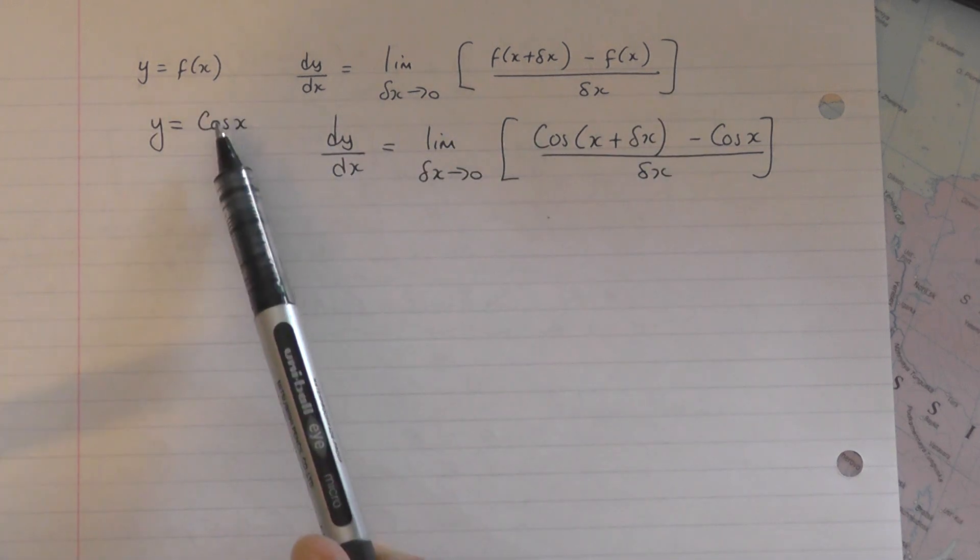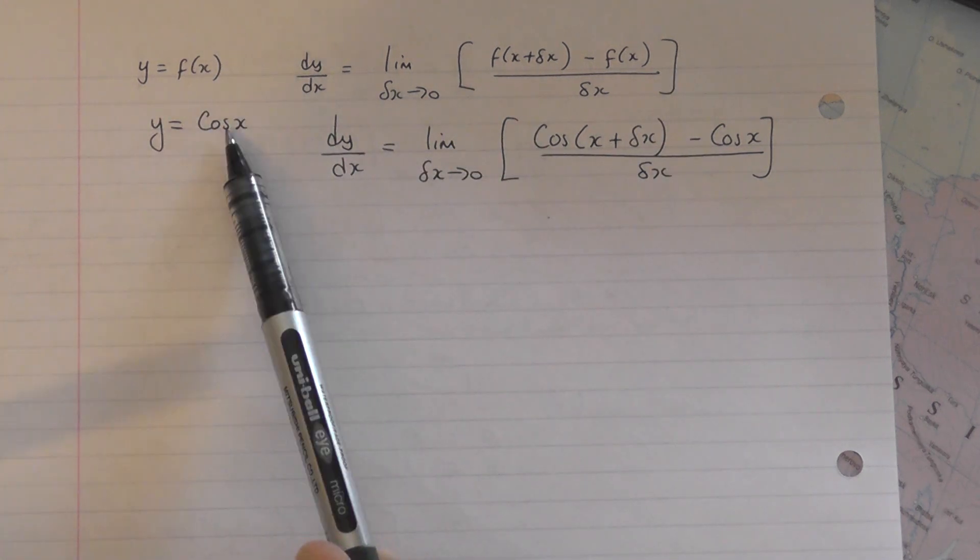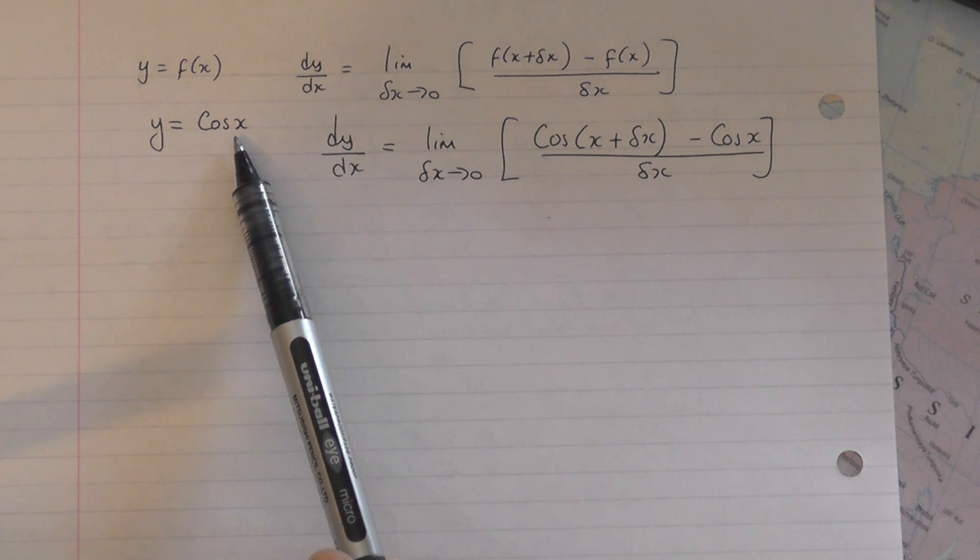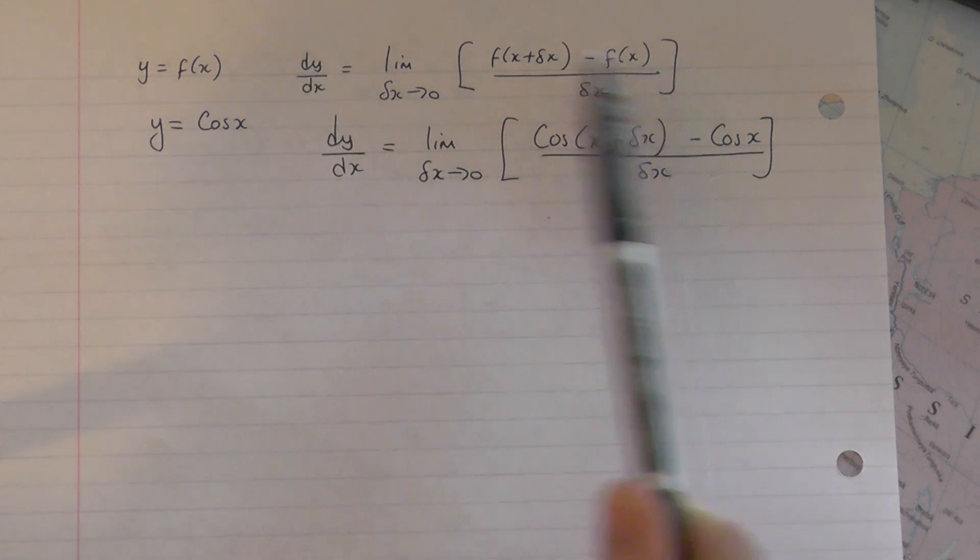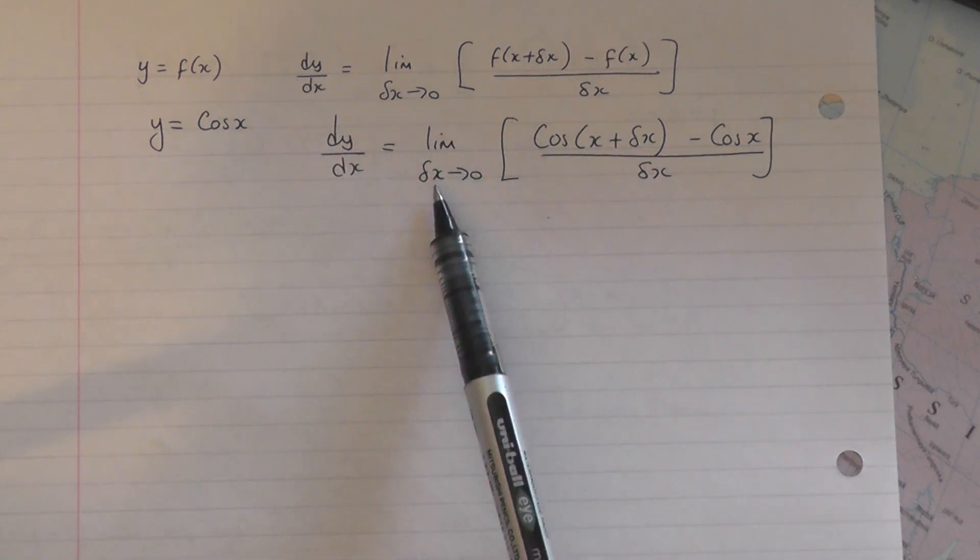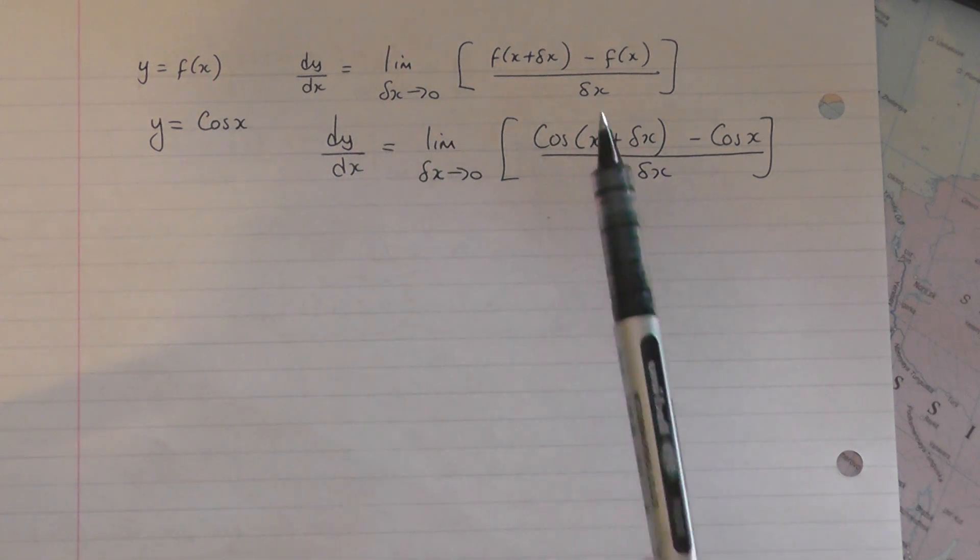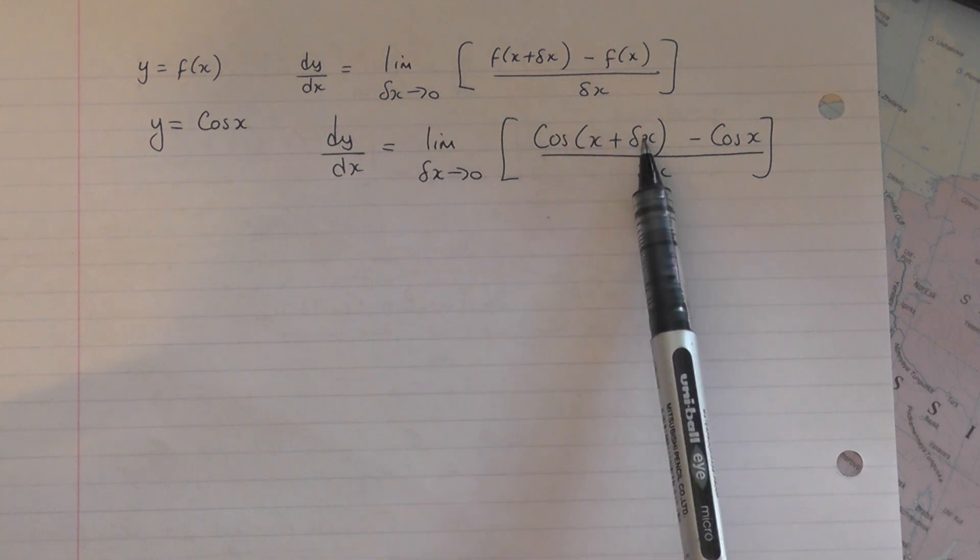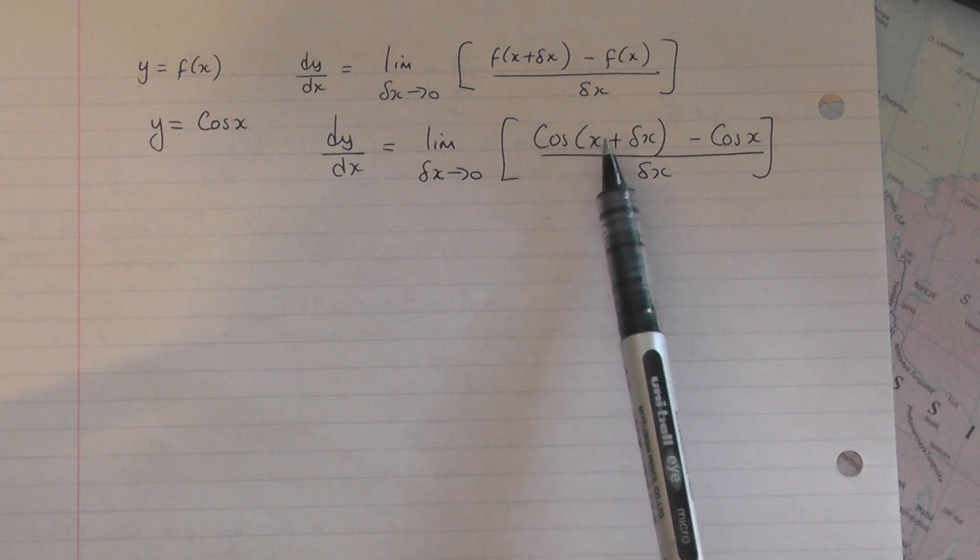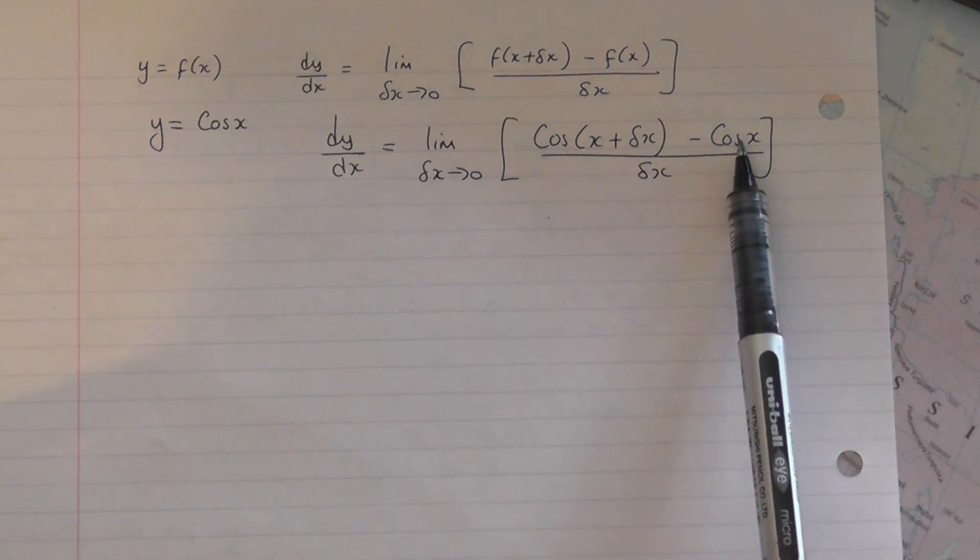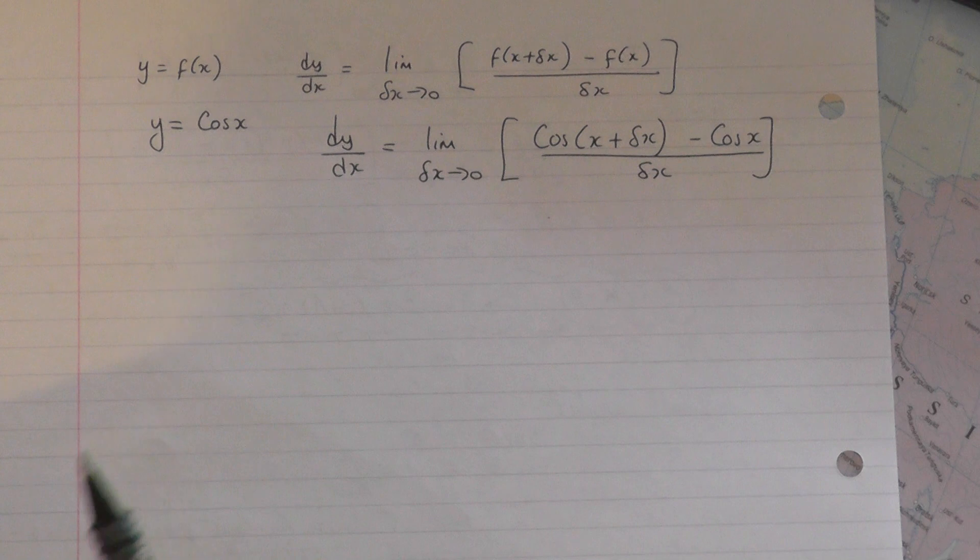In this particular case f of x is going to be cos x, so we're dealing with y equals cos x. So when I come to write down this expression now, applying it to y equals cos x, we end up with lim delta x tends to naught of cos of x plus delta x instead of f of x plus delta x. So it's cos of x plus delta x minus cos x instead of minus f of x, all over delta x.